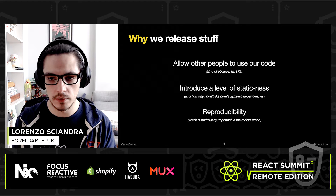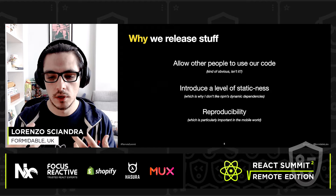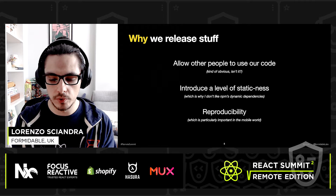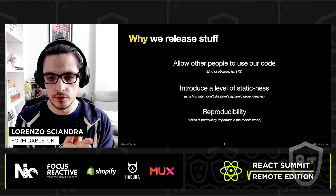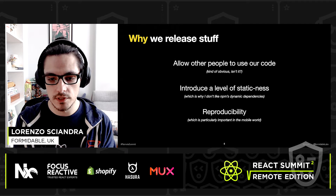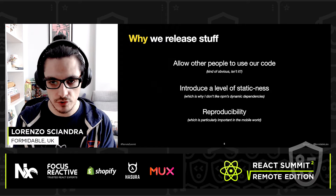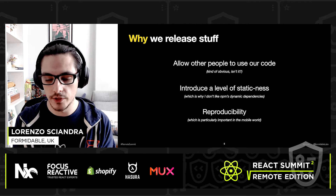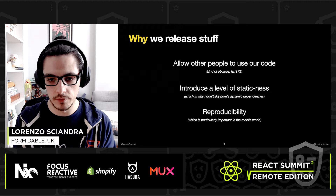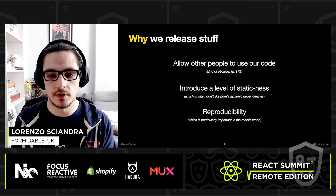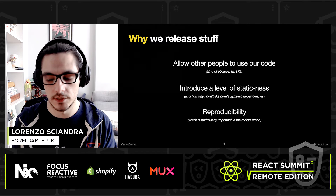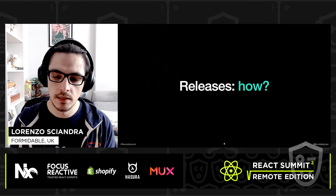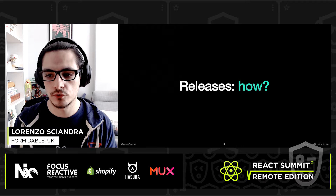Why do I like strict staticness? Because it allows reproducibility. In the mobile world especially, I really want to minimize the possibility of not being able to get back to a precise point in time for that code. If I need to test a previous version of an app I released, I need to make sure every piece of code is precisely the same so I can work on it.